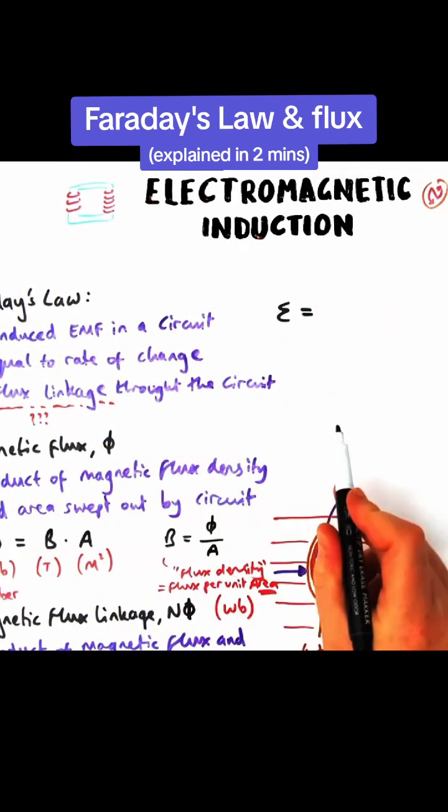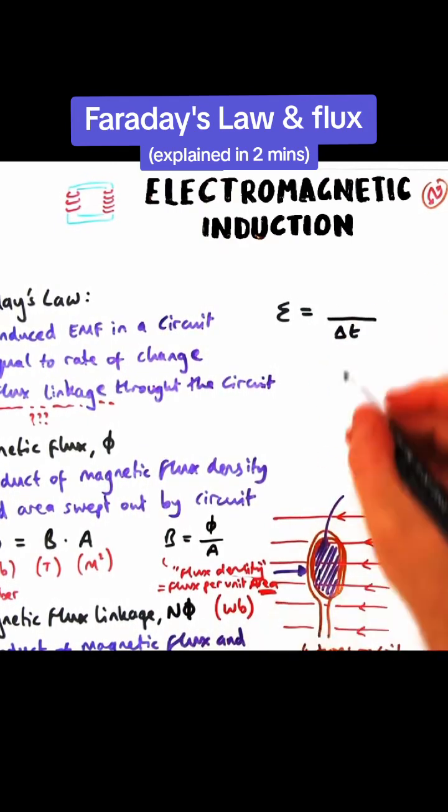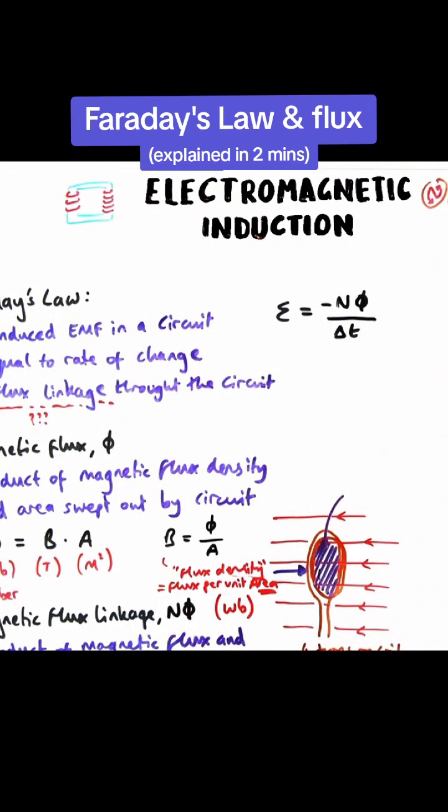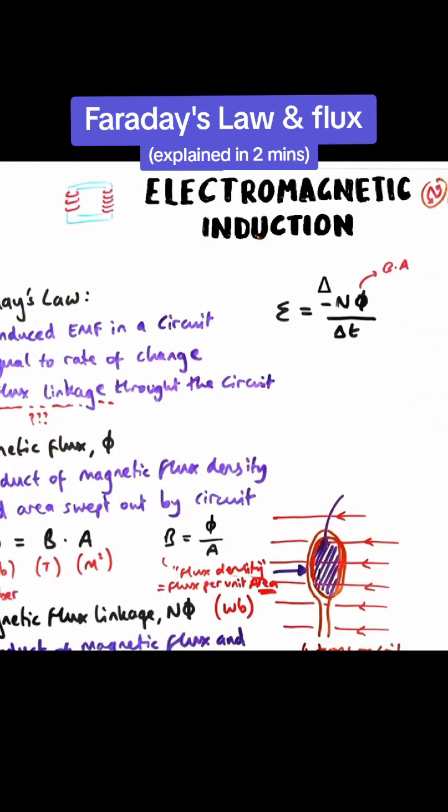In terms of an equation for Faraday's law, we can represent it like this. So EMF, the curly epsilon symbol, equals the rate of change of flux linkage. Flux linkage is N phi, and because it's a rate it's divided by a change in time.